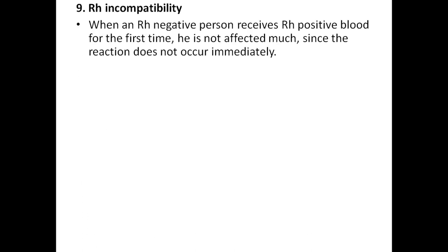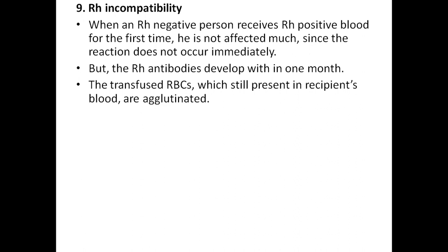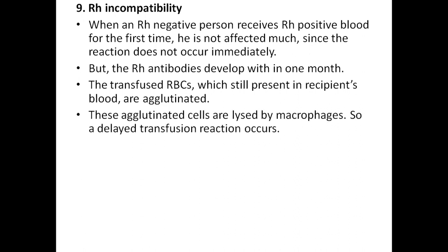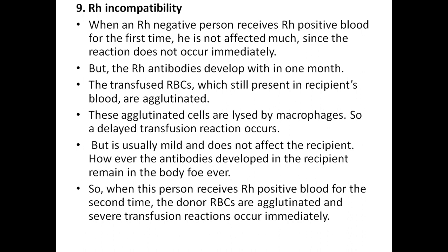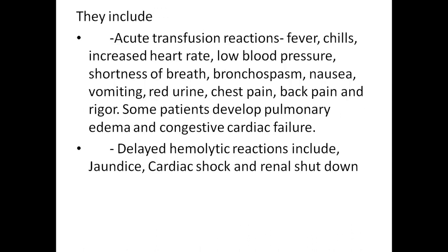Rh incompatibility: when an Rh-negative person receives Rh-positive blood for the first time, they are not affected much as the reaction does not occur immediately, but Rh antibodies develop within a month. The transfused RBCs that remain are agglutinated and lysed by macrophages, causing a delayed transfusion reaction that is usually mild. However, the antibodies remain in the body forever. So when this person receives Rh-positive blood for the second time, donor RBCs are agglutinated and severe transfusion reactions occur immediately — including fever, chills, increased heart rate, low blood pressure, shortness of breath, bronchospasm, nausea, vomiting, red urine, chest pain, and back pain. Some patients develop pulmonary edema, congestive cardiac failure; delayed hemolytic reactions include jaundice, cardiac shock, and renal shutdown.